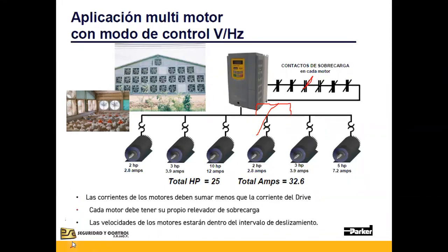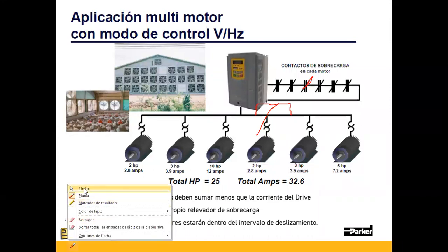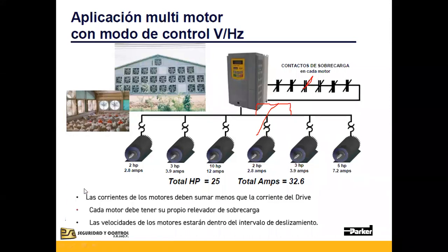Un punto importante: los relevadores de sobrecarga deben ser de tipo bimetálico o de aleación eutéctica, es decir, que trabajen directamente con la corriente. Como la salida del variador es PWM, no es una onda senoidal, si se pusiera uno de tipo electrónico pudiera no funcionar adecuadamente, ya que estos trabajan con transformador y están esperando la señal de 60 Hz. Al llegarle el PWM no van a funcionar correctamente. Un relevador bimetálico funcionaría perfecto en esta aplicación.